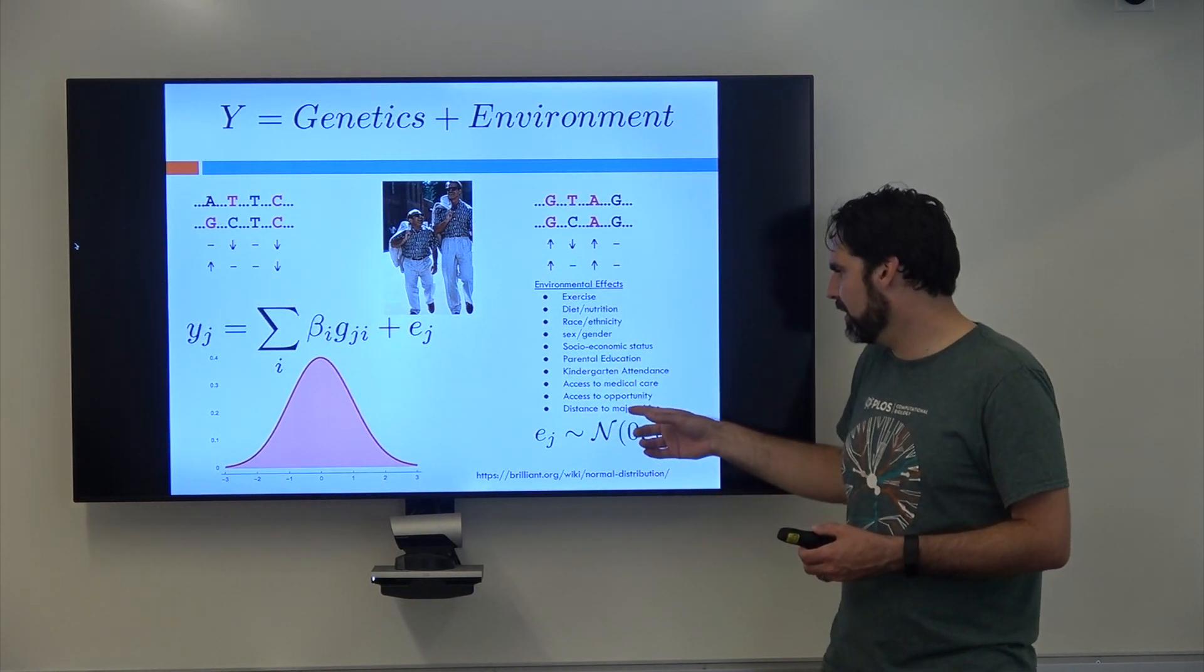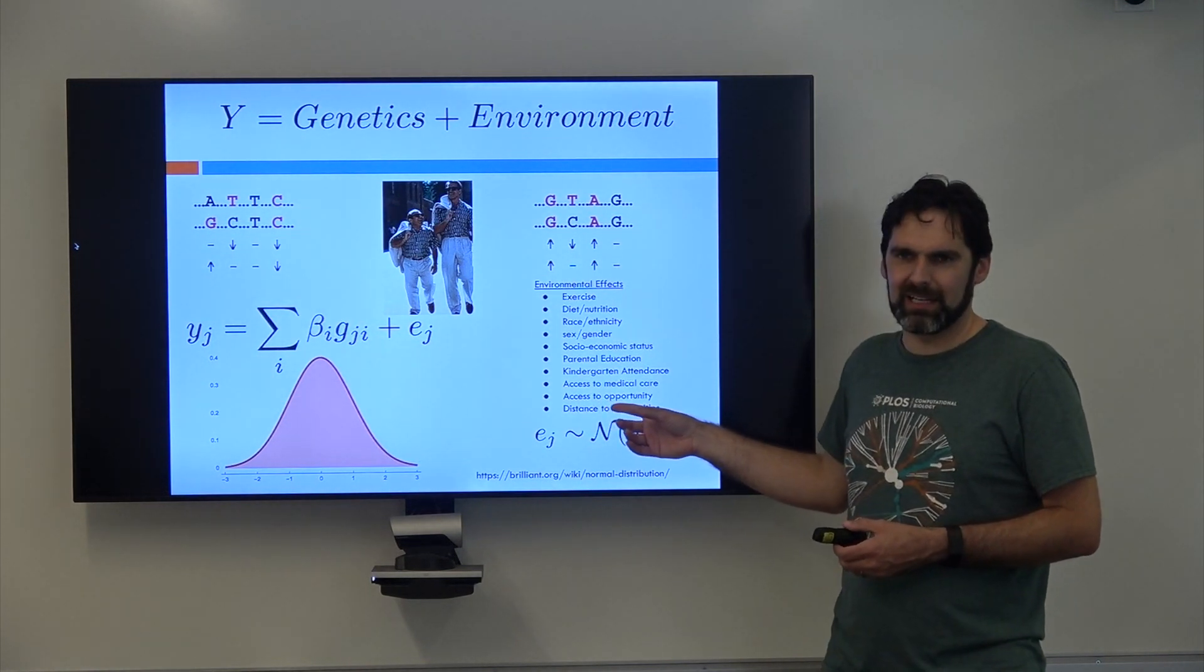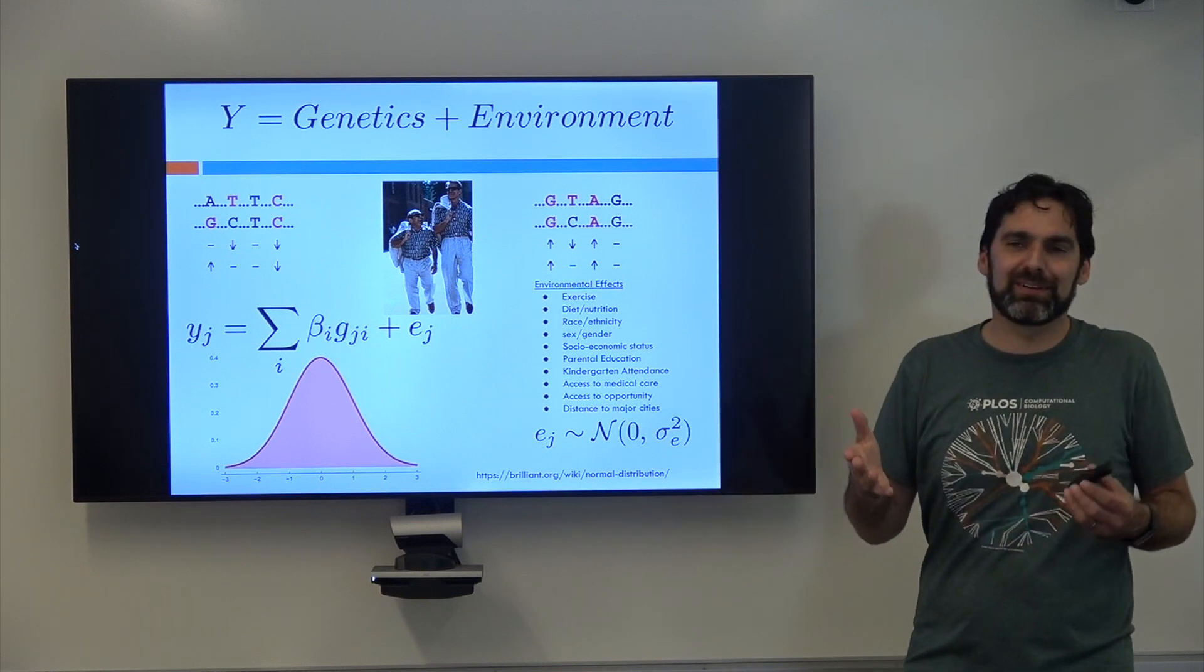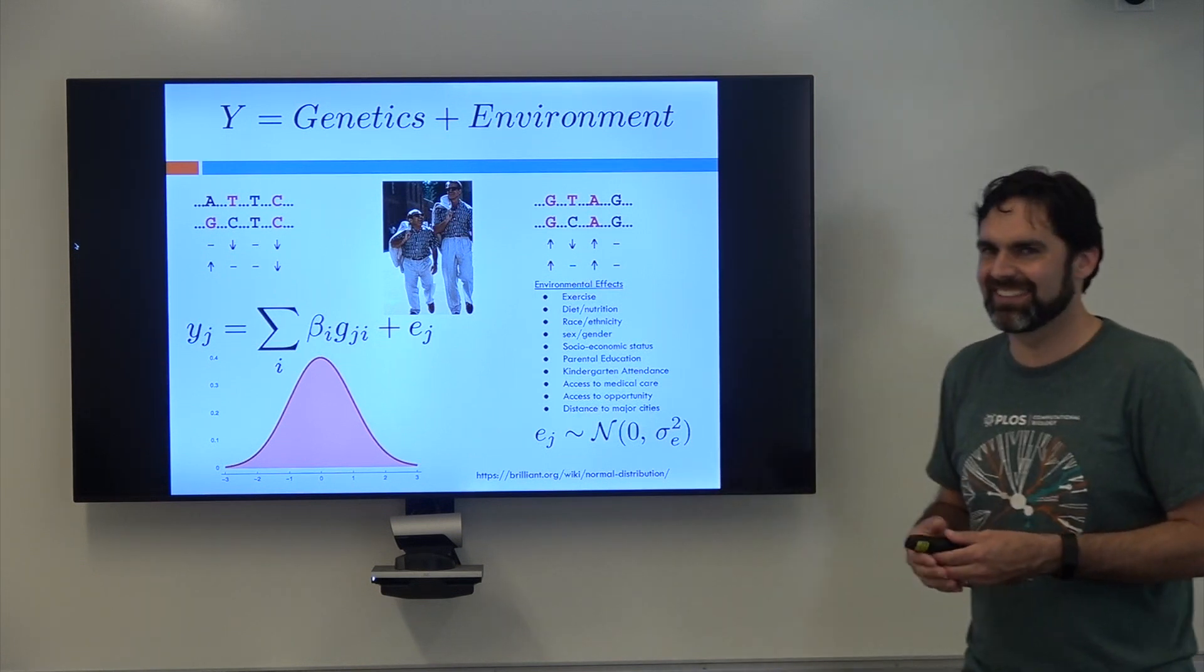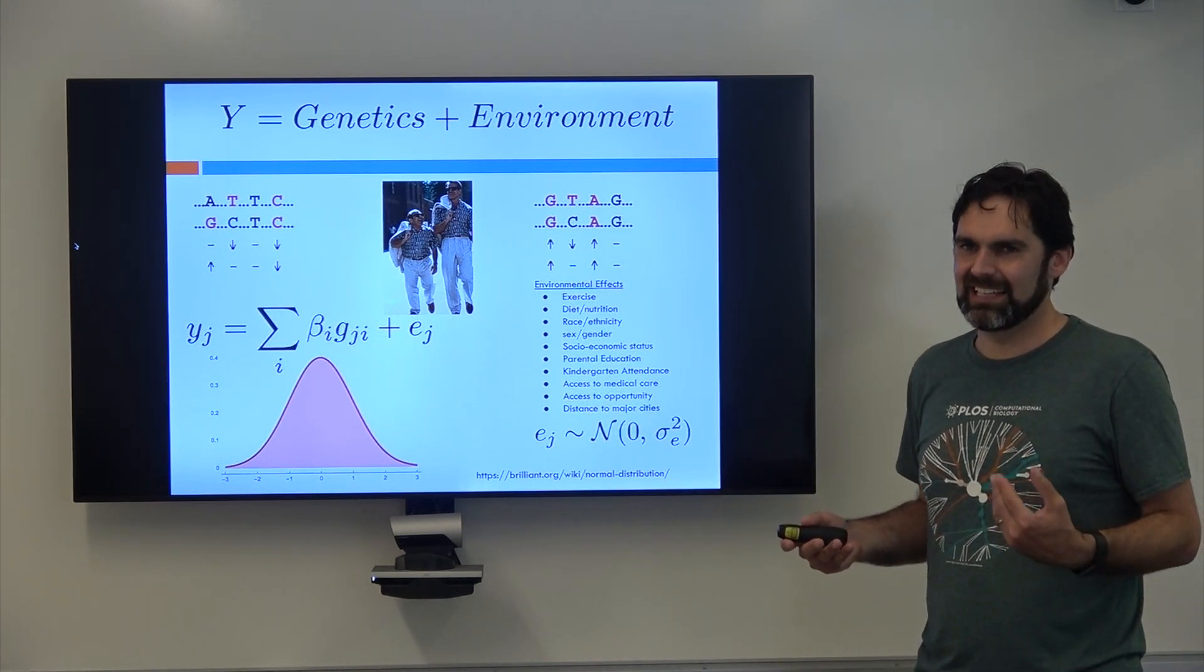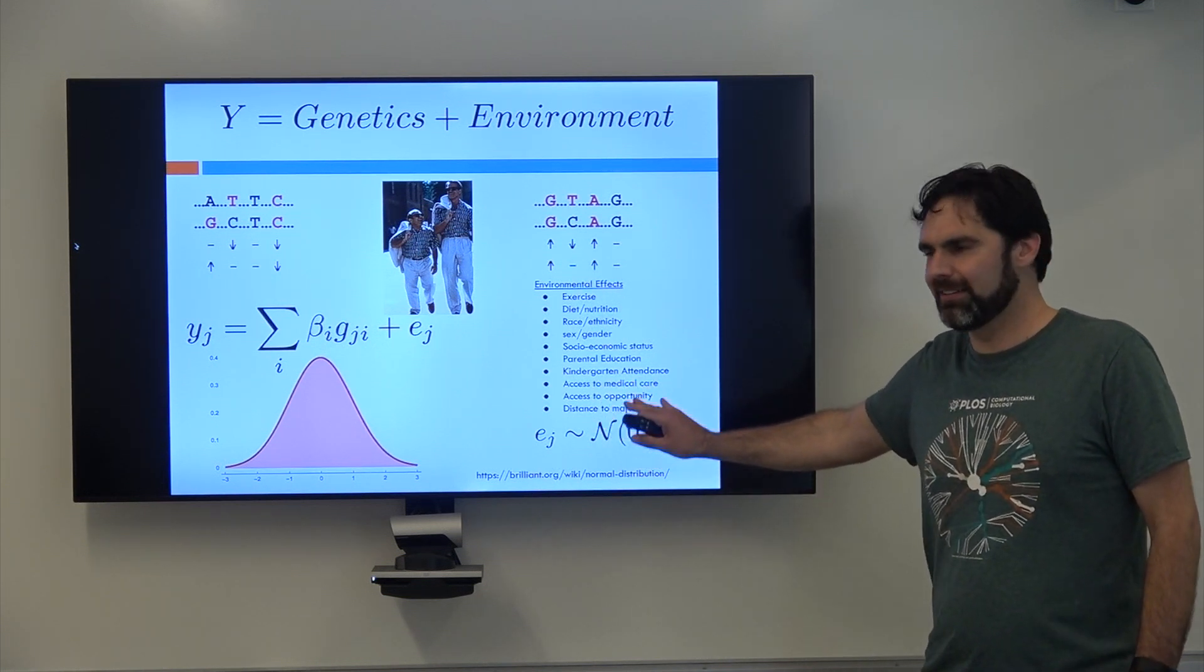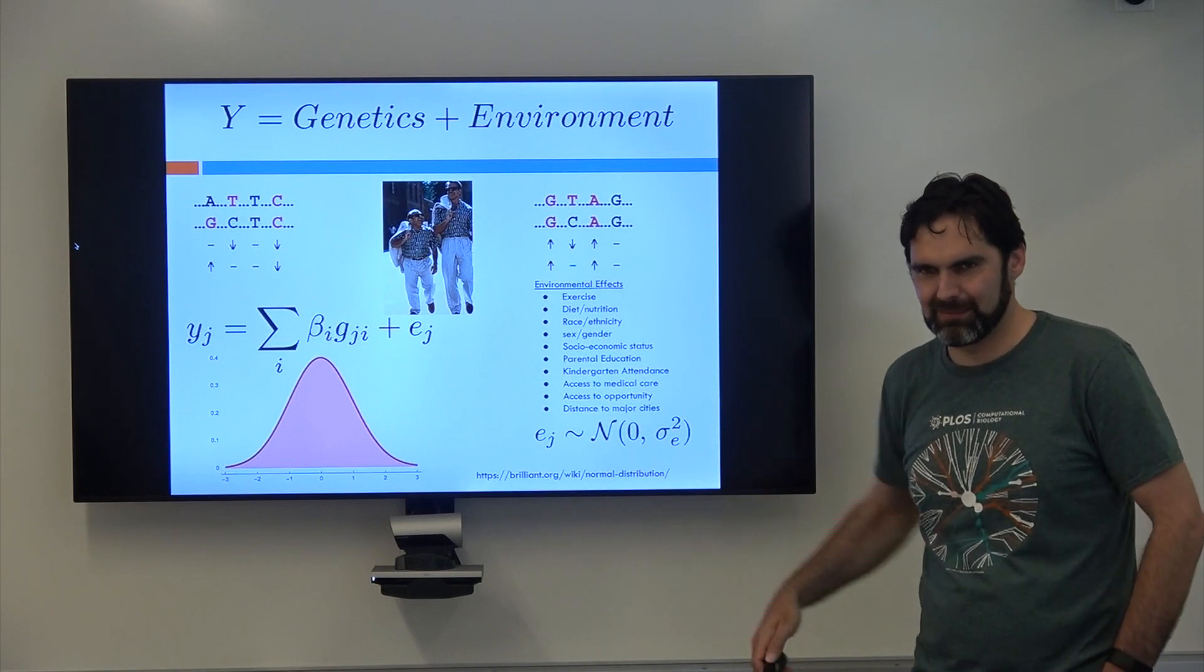So there's a few that we always measure when we do studies. But like, no one's gonna go and try to quantify your access to opportunity. Like I've seen it, people do it, it's really interesting research, but it's really hard to do and no one's got that sort of money. So we just assume that all the environmental effects have a distribution.